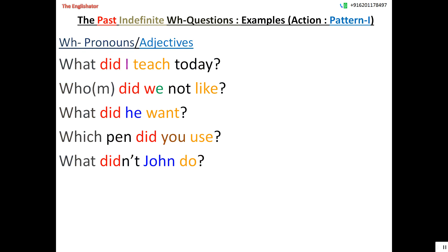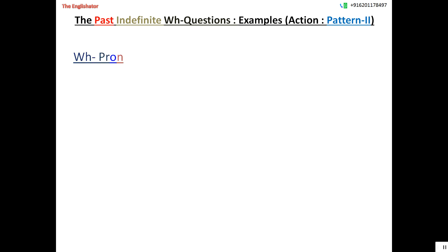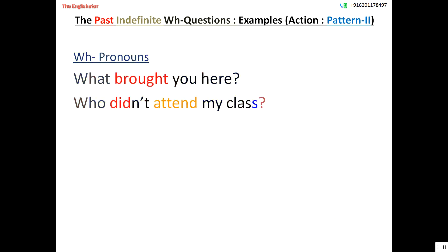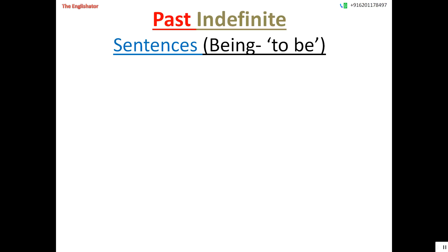Here are examples for Pattern 1: What did I teach today? Who did we not like / Whom did we not like? What did he want? Which pen did you use? What didn't John do? When did you study? Why did they shout? How did it fall down? Why didn't she come? Where did John live? For Pattern 2: What brought you here? Who didn't attend my class? Which pen wrote well? Whose dogs did not bark here?